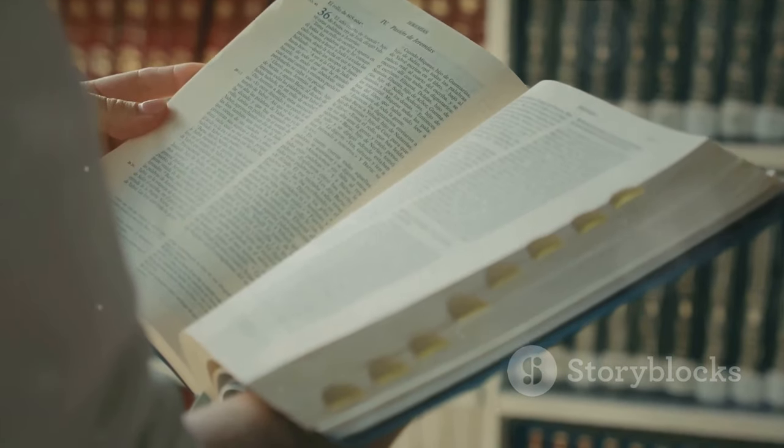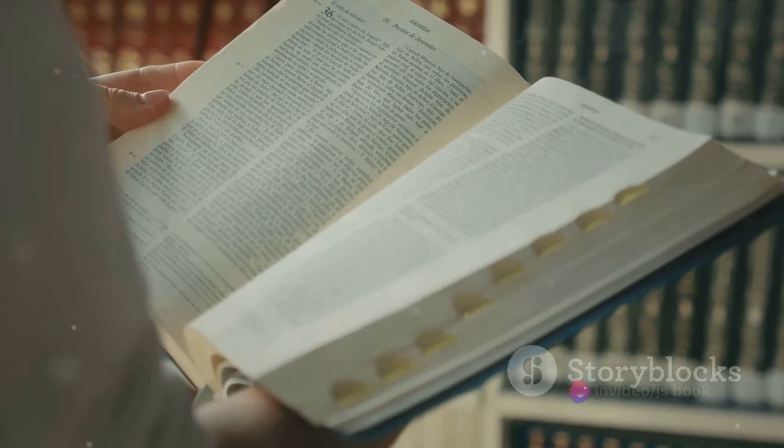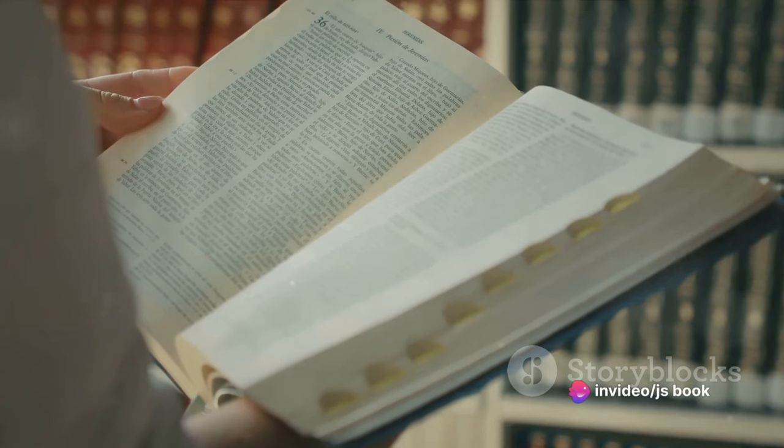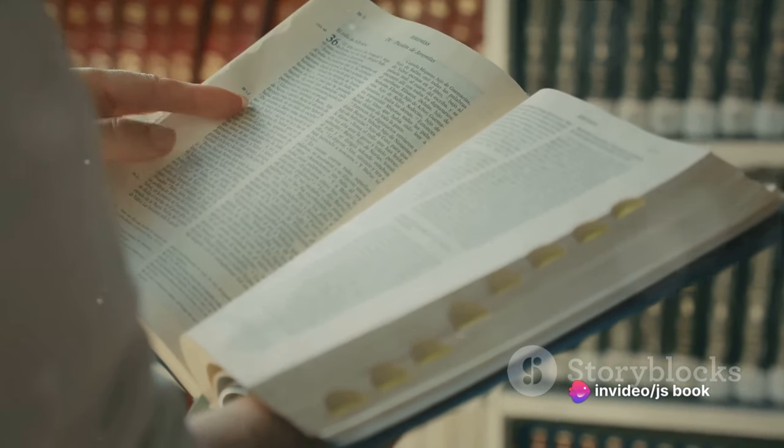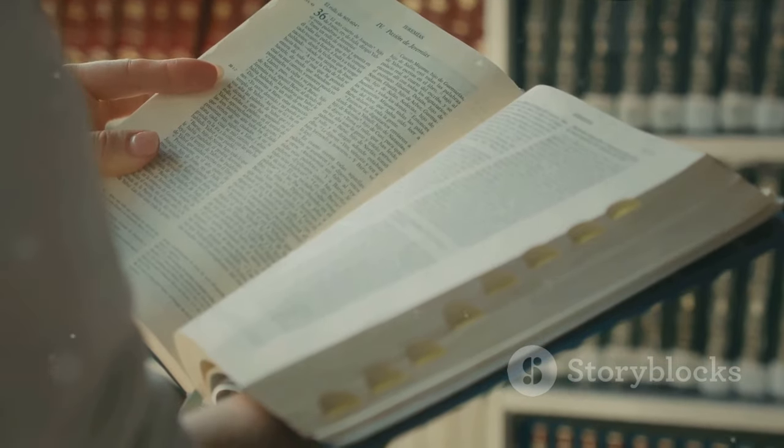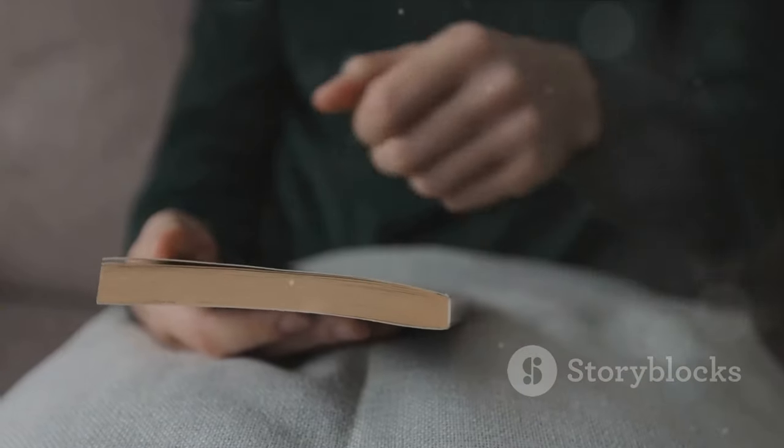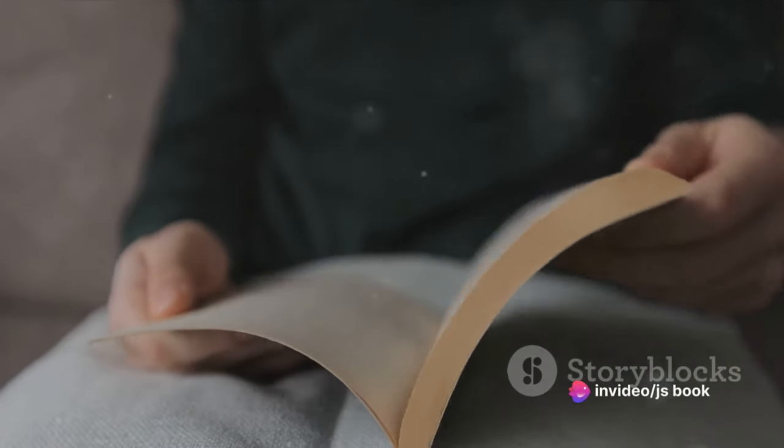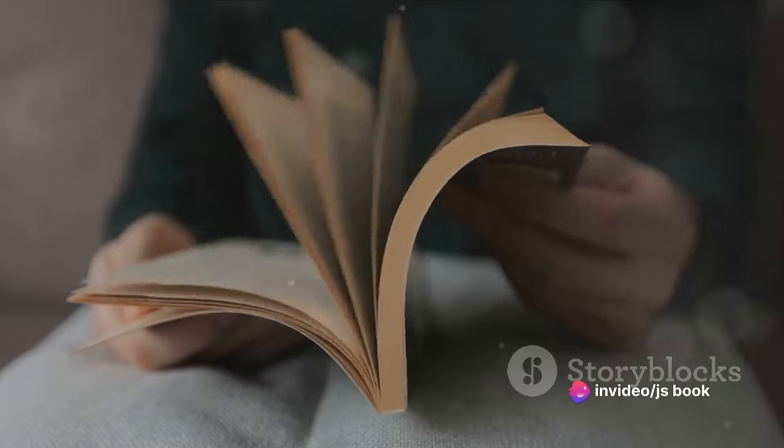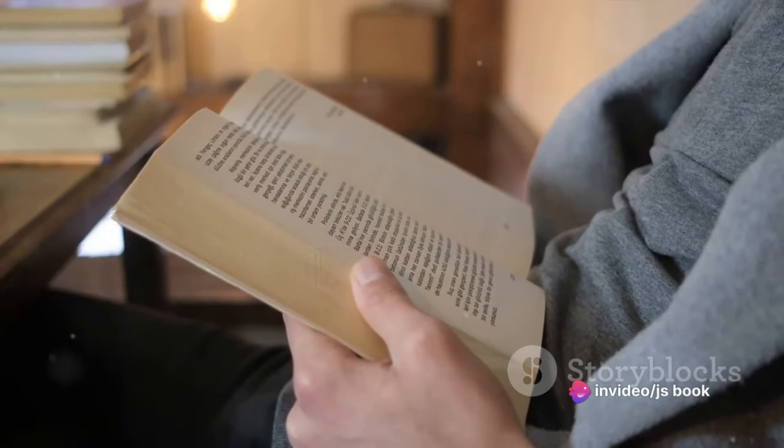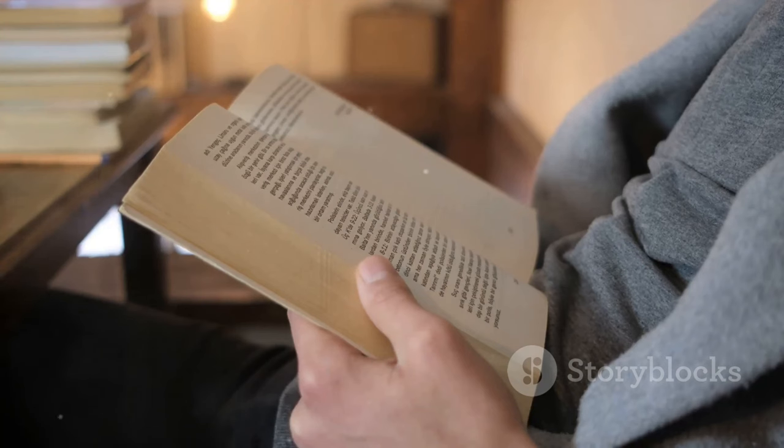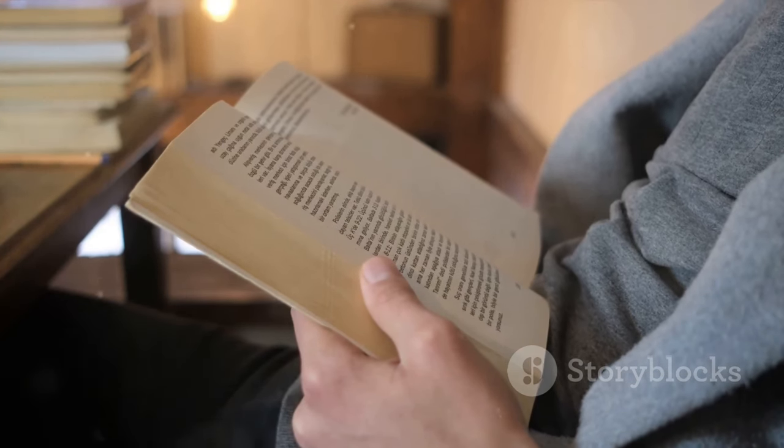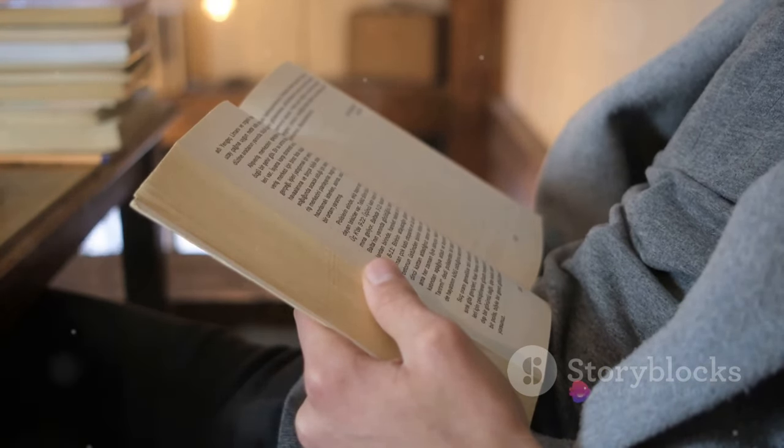As the chapters unfold, we see the investigators piecing together fragments of truth from the sea of deceptions. Each clue uncovered, each testimony analyzed brings them a step closer to the truth. Yet the closer they get, the more complex the mystery becomes. With every piece of evidence, every testimony, the investigators find themselves faced with more questions than answers. The murder is not an isolated incident but a piece of a larger, more complex puzzle. The school is not just a backdrop for the crime but a character in itself, its secrets as intricate and convoluted as the mystery they're trying to solve. With each chapter the mystery deepens, pulling us further into the story.